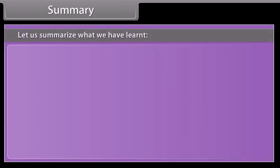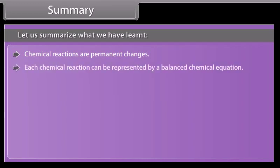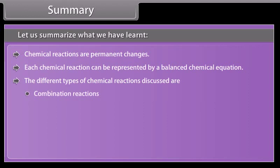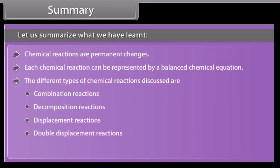Summary. Chemical reactions are permanent changes. Each chemical reaction can be represented by a balanced chemical equation. The different types of chemical reactions discussed are: Combination reactions, Decomposition reactions, Displacement reactions, Double displacement reactions, and Redox reactions.